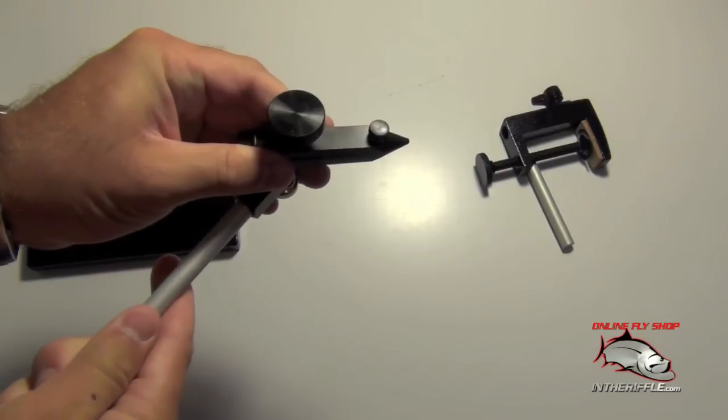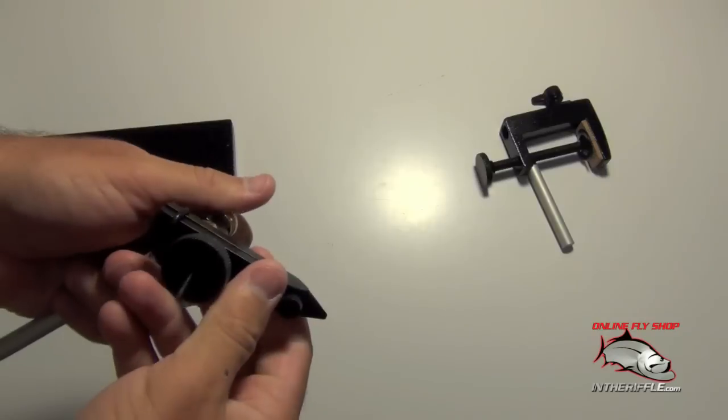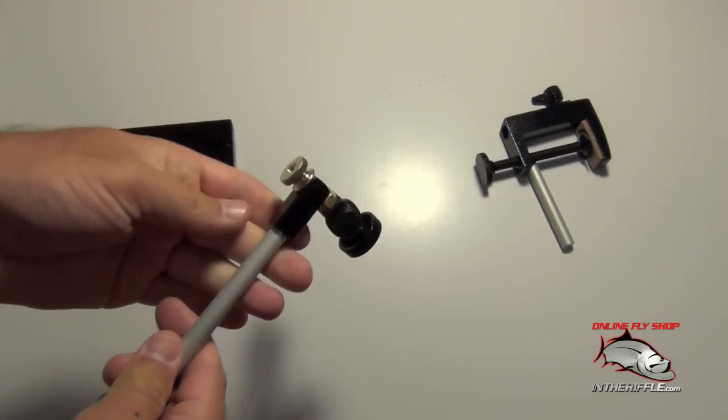You can move the vise head by just loosening the thumbscrew here. You can point the vise head straight, angle it up, whatever angle you prefer.